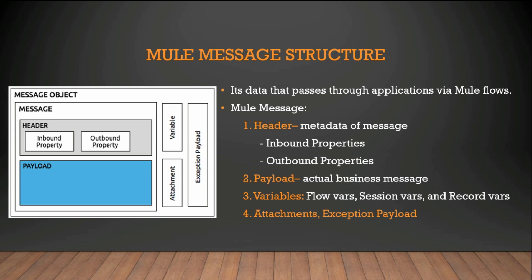The third part of the message object is variables. Variables are user-defined metadata about a message and there are three main types depending on their scope: flow variables, which exist only within a flow; session variables, which are visible across the application; and record variables, which are used specially in batch processing. Attachments and exception payloads are extra data of a Mule object which do not necessarily appear every time under a Mule message object.